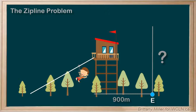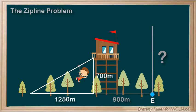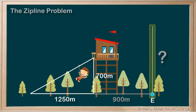If you know that their current zipline is 700 meters tall over a distance of 1,250 meters, and that the proposed location is another 900 meters to the east, how tall would you need to build the new tower, assuming that you don't change the angle of descent?